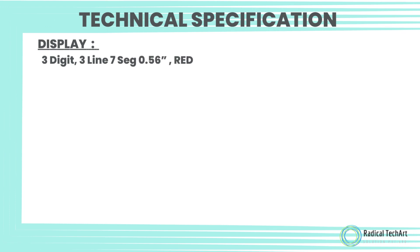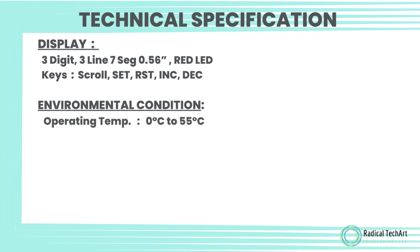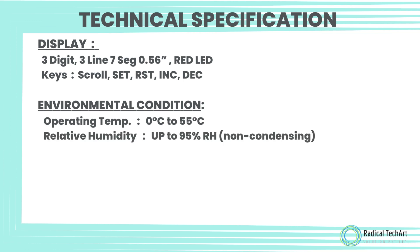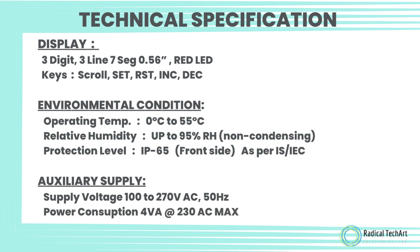Technical Specifications — Display: 3-digit, 3-line, 7-segment, 0.56-inch red LED. Keys: scroll key, set key, reset key, increment key, decrement key. Environmental conditions: Operating temperature 0°C to 55°C; Relative humidity up to 95% RH non-condensing; Protection level IP65 on front side as per IS/IEC.